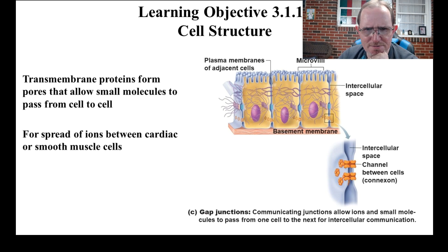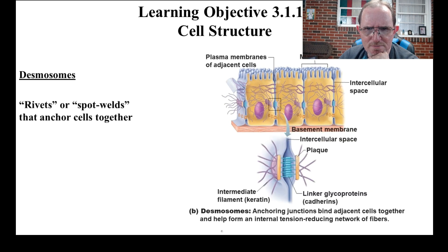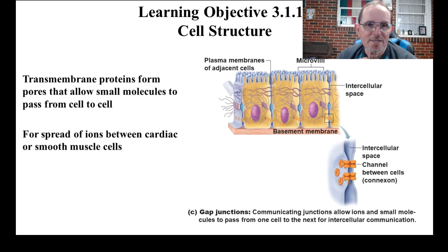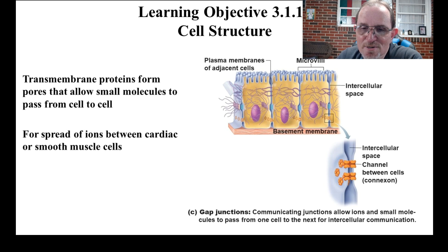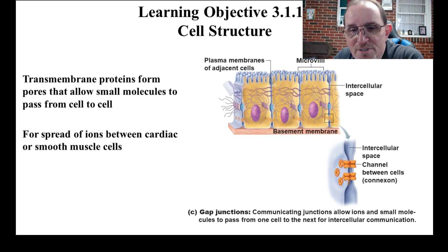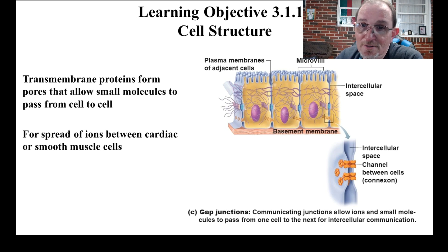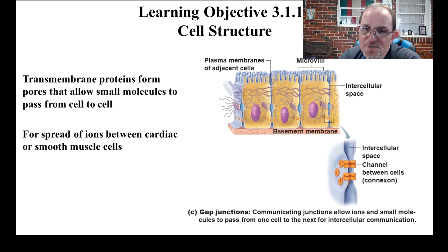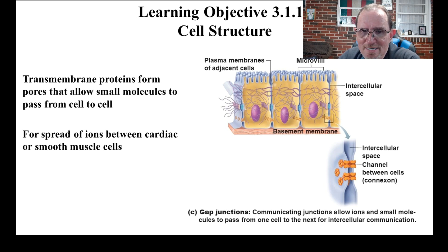Gap junctions — you've got these in the heart and some other selected places. They attach two cells together but are basically a channel or tunnel so that things can go from one cell to the other without having to go through all the trouble of getting out of one cell, floating across, and getting into the other. They're transmembrane — they go through the entire membrane of two cells. That's going to be super important when we get to the heart in A&P 2.